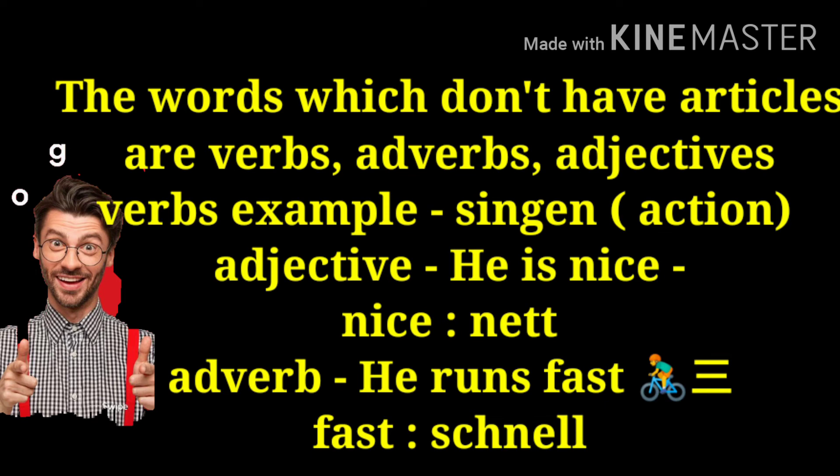You can see two examples: 'He is nice' and 'He runs fast.' The German word for 'nice' is 'nett' — spelled N-E-T-T — and we are not using any article with it. The German word for 'fast' is 'schnell,' and again no article is used. These are the words that don't take articles. All nouns, on the other hand, will have an article.